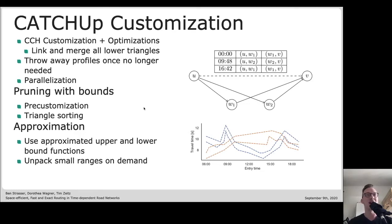We can employ the same parallelization strategies as we can for classical customizable contraction hierarchies. Also, we do a lot of pruning to avoid expensive link and merge operations. We do that in two ways. First, we do a pre-customization where we only use scalar upper and lower bounds at each arc which already allow us to remove a bunch of arcs. Also, we process triangles in a certain order - we first process triangles where according to the bounds the triangle is shorter, so we can possibly avoid linking the functions of longer triangles later.